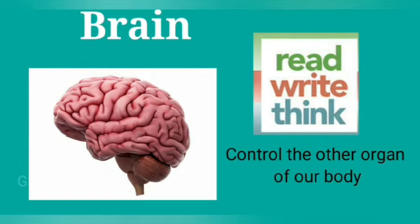What does the brain do? The brain helps us to think and remember, and also helps us to read and write. The main function is to control the other organs of our body.